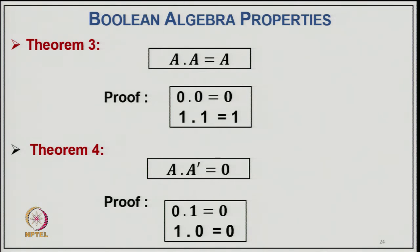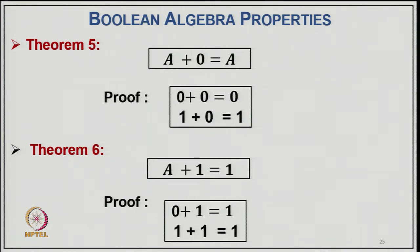Theorem 3: A·A = A. Proof: 0·0 = 0 and 1·1 = 1. Theorem 4: A·A' = 0. Proof: 0·1 = 0 and 1·0 = 0, where A' is the complement of A. Theorem 5: A+0 = A. Proof: 0+0 = 0 and 1+0 = 1. Theorem 6: A+1 = 1. Proof: 0+1 = 1 and 1+1 = 1.